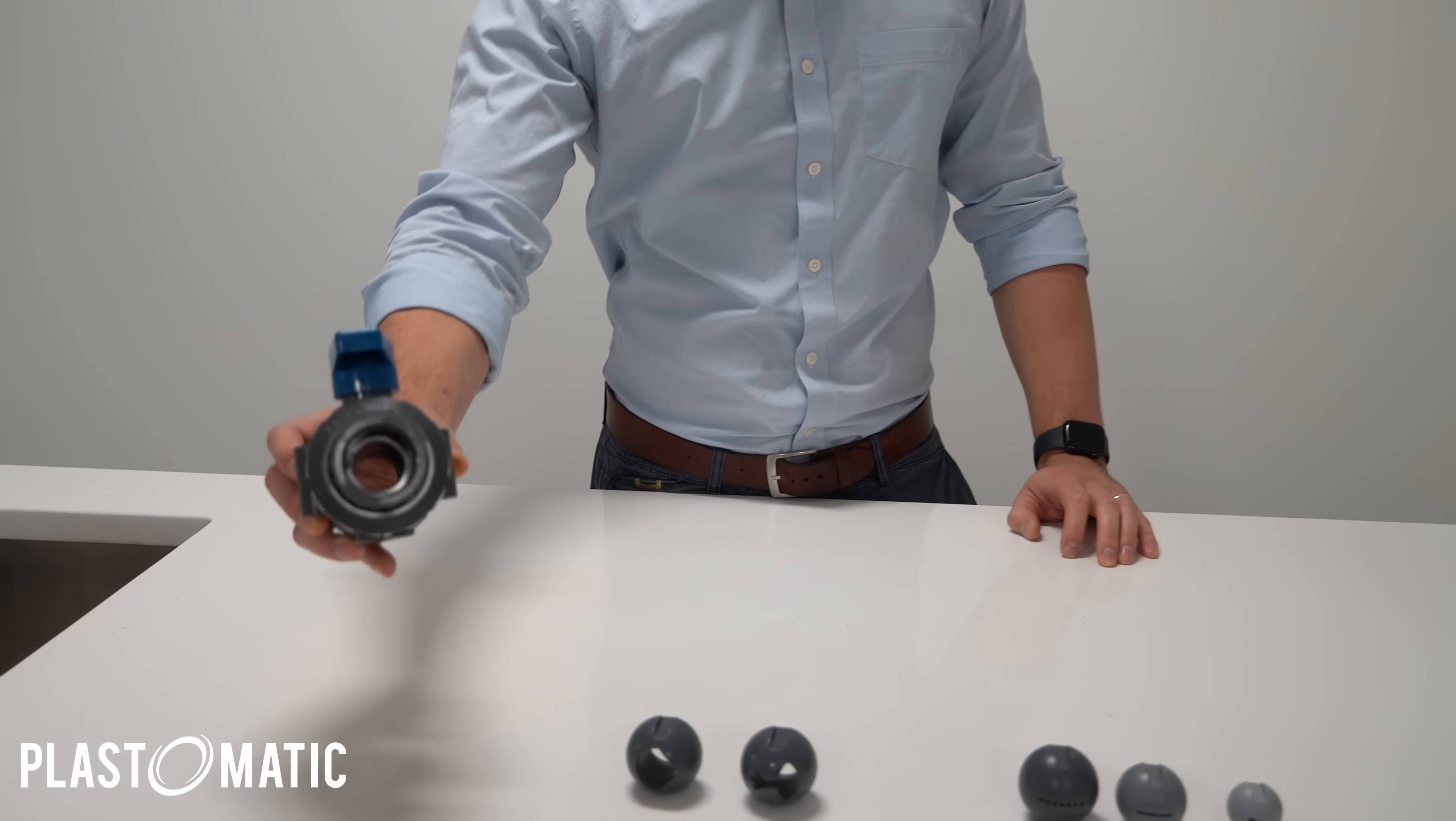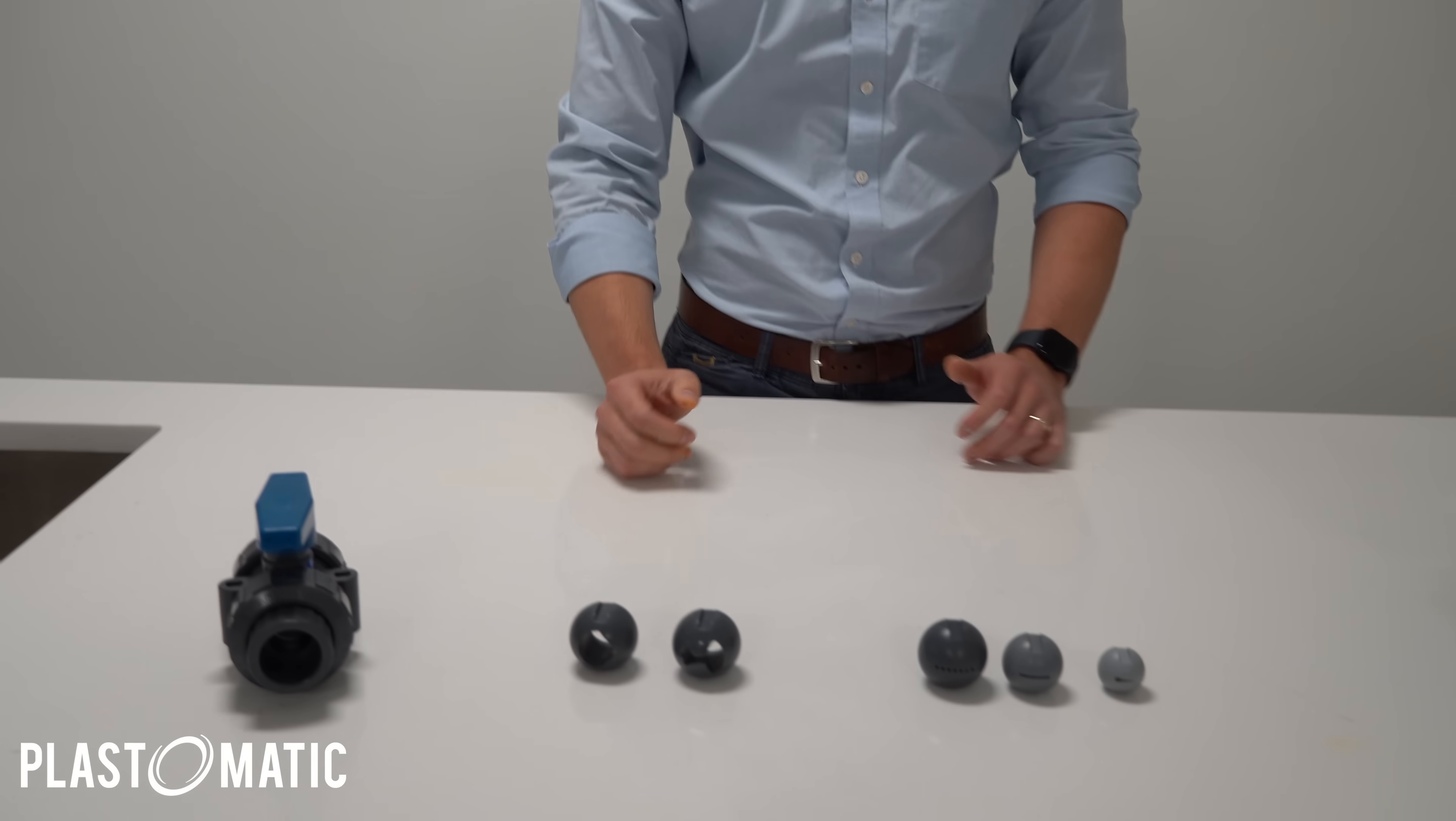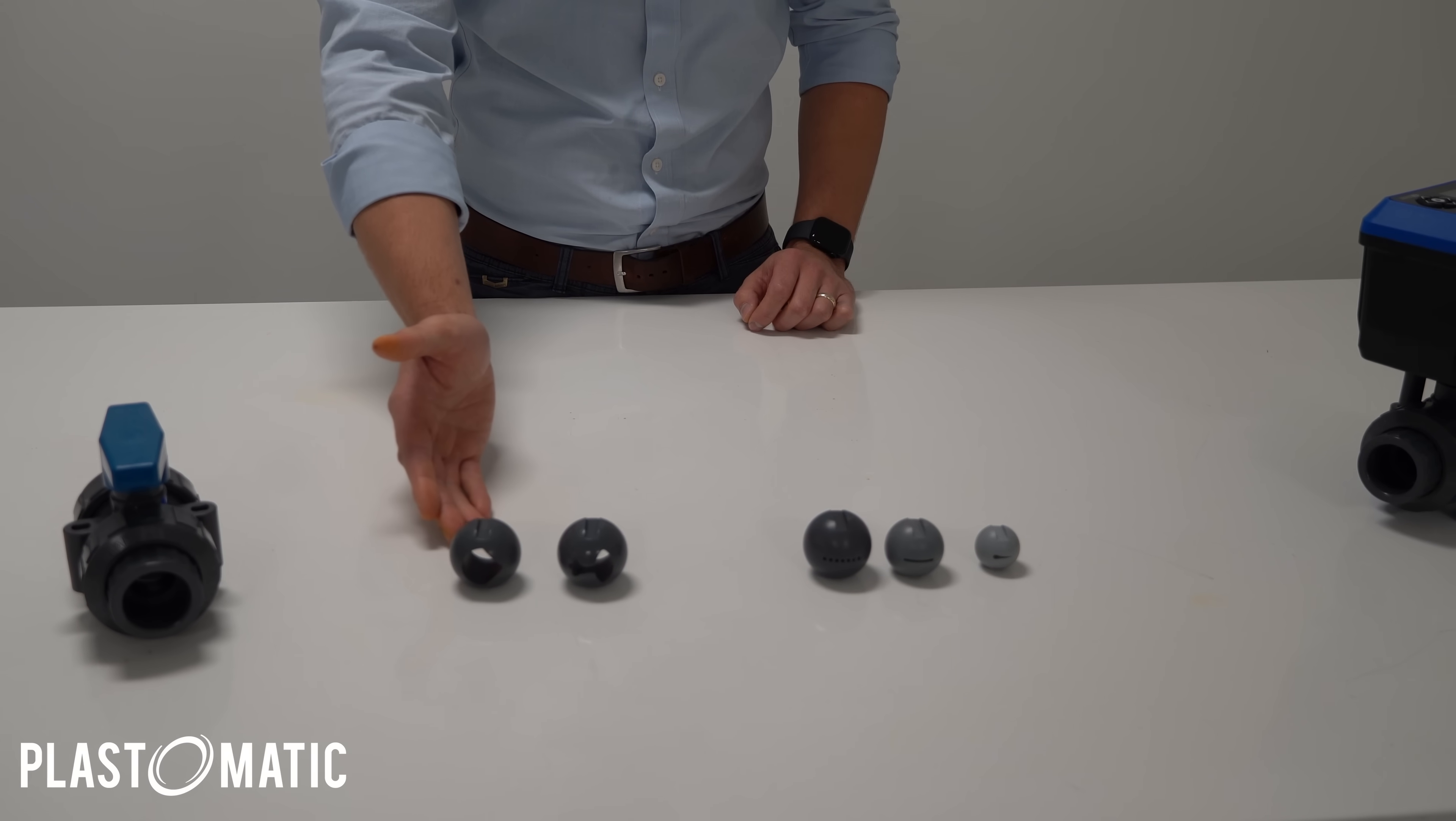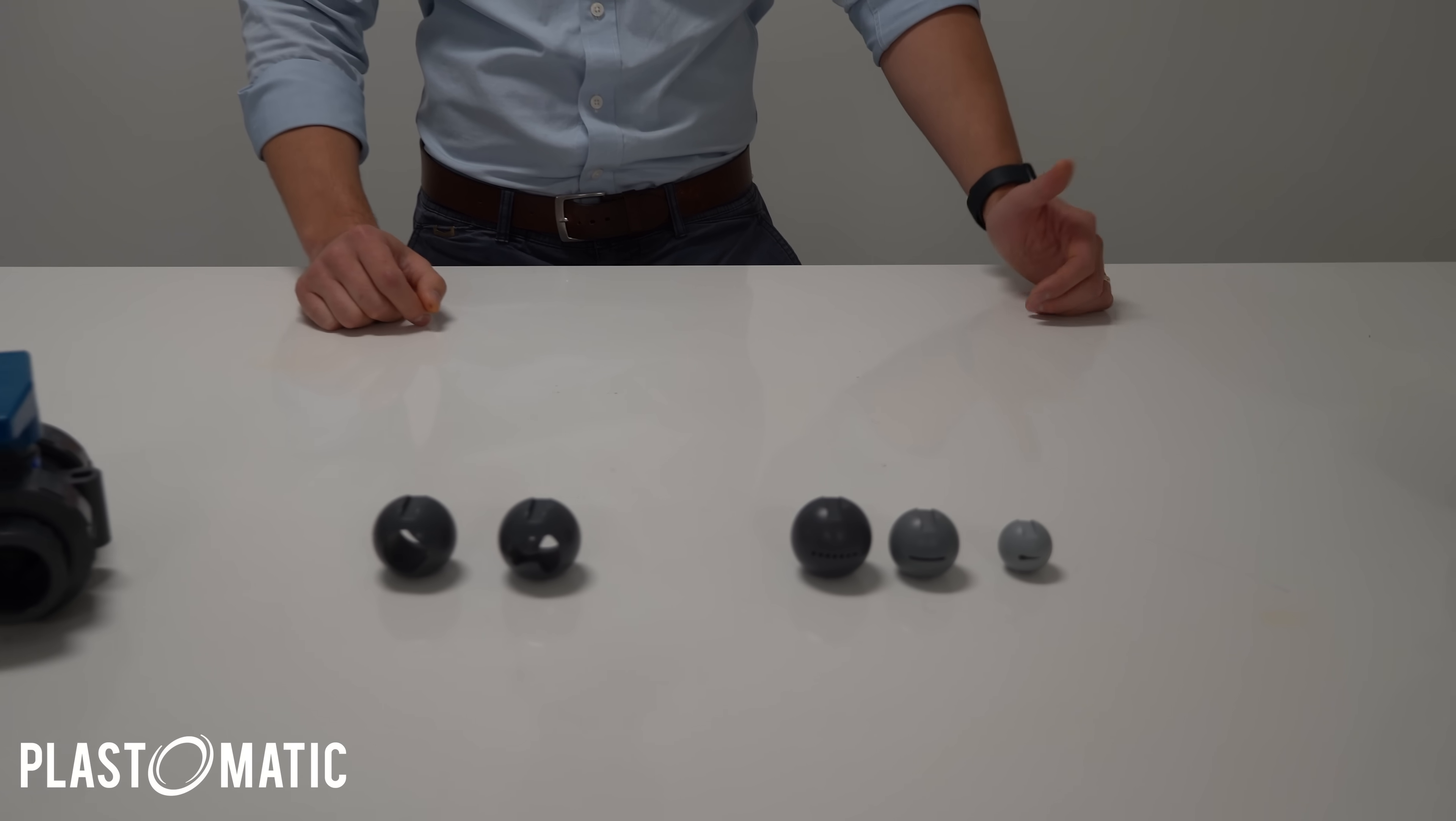Most of the time we see ball valves like this for a block and vent or shutoff application with a full-port ball. But we could also use them as an economical option to control flow. You'll see here some standard options, a linear flow control and an angled ball ranging from 15 to 90 degrees.